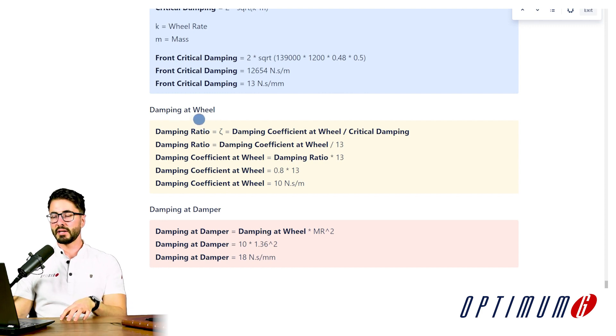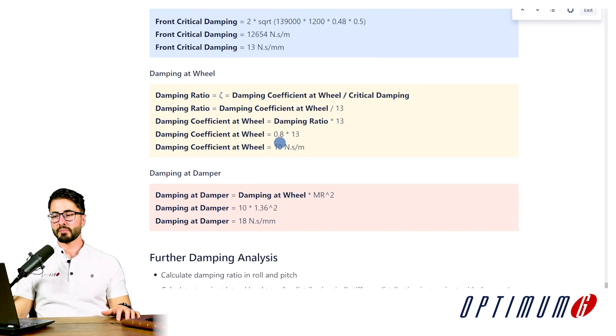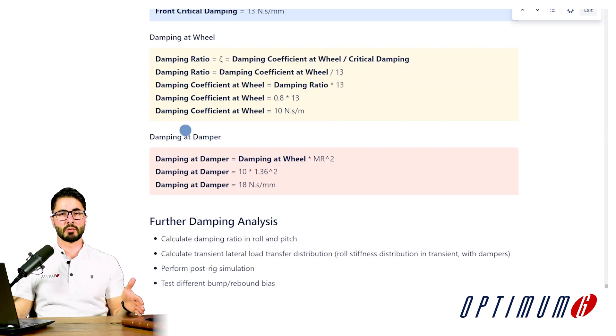Let's now calculate the real damping that we want at the wheel. Well, we know that the damping ratio we want is 0.8 and we know that the damping ratio will also define what is the real damping we have on the wheel. We just follow this equation. We manipulate it a little bit and if we want to use 0.8 of the critical damping, which is 13, we come up with a damping coefficient at the wheel of 10 newton second per millimeter. This is at the system level.